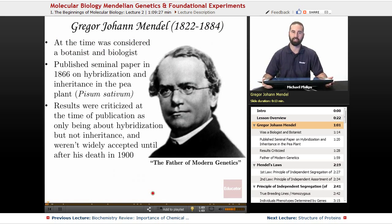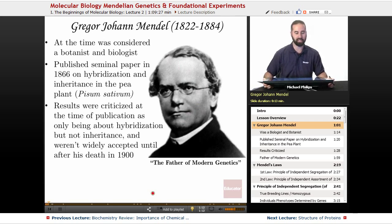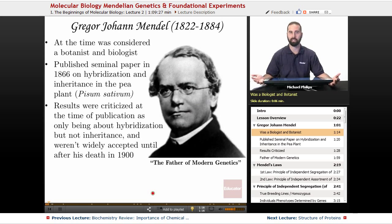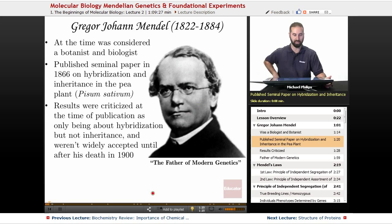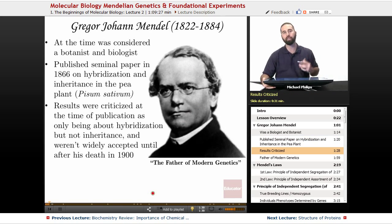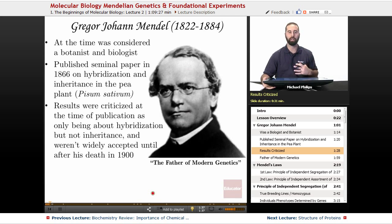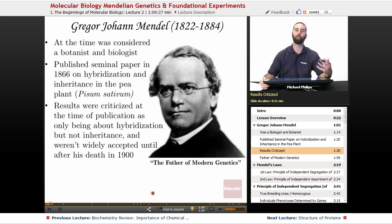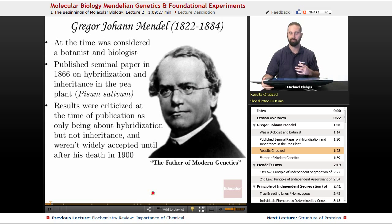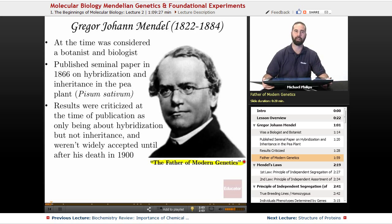Talking about molecular biology cannot be done without first starting with Gregor Johann Mendel. Mendel lived in the 19th century and at the time he was considered a biologist and a botanist — he did most of his work on plants. He published a seminal paper in 1866 on hybridization and inheritance of the pea plant. Unfortunately for Mendel, his results were criticized at publication as only being about hybridization and not about inheritance, and his work wasn't widely accepted until after he passed away, around 1900. Looking back, we now consider Gregor Johann Mendel the father of modern genetics.